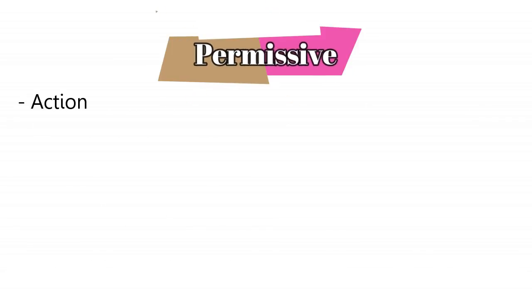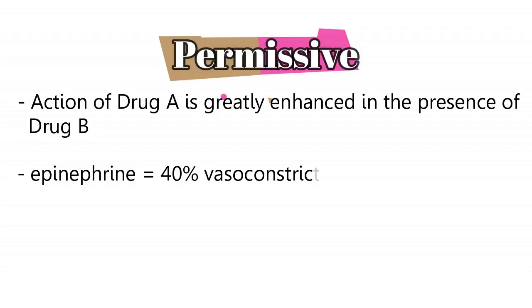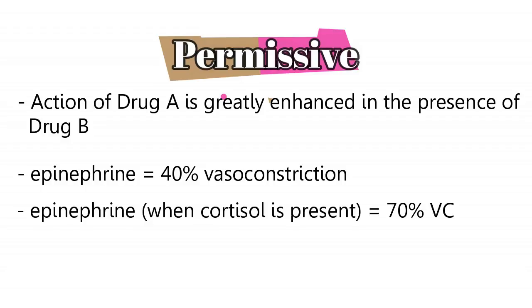Next we have the permissive effect. A drug has permissive ability when the action of drug A is greatly increased by the presence of drug B. For example, epinephrine alone can cause 40% vasoconstriction, but epinephrine in the presence of cortisol can cause 70% vasoconstriction.